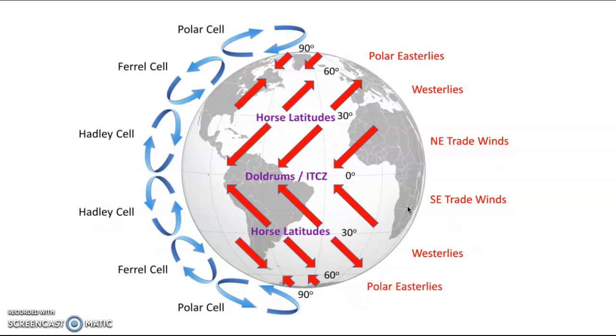The westerlies are the dominant winds between 30 degrees to 60 degrees in both hemispheres, and the polar easterlies are found between 60 degrees and the poles.